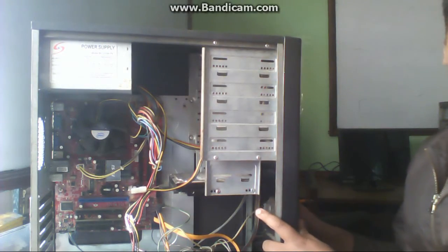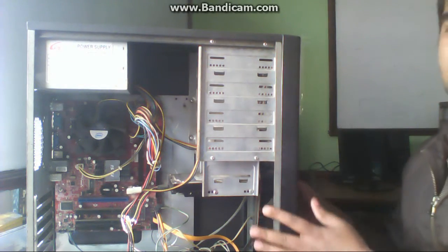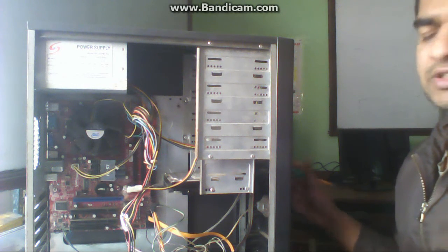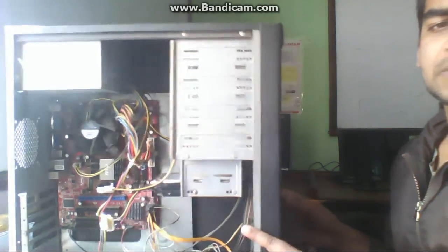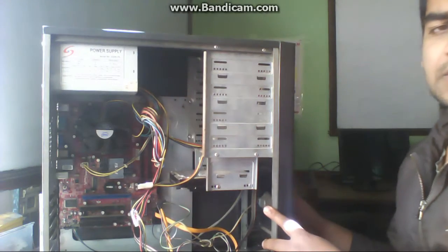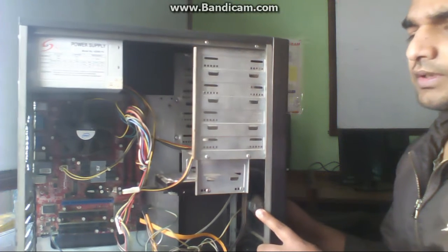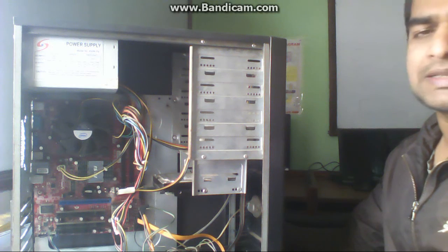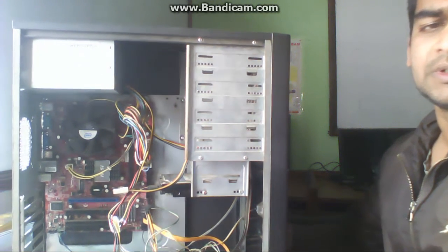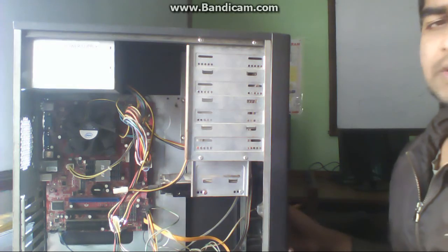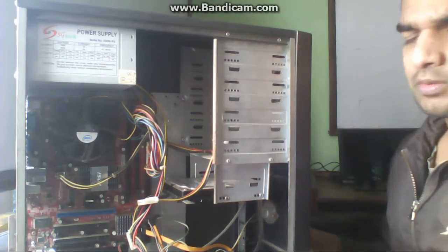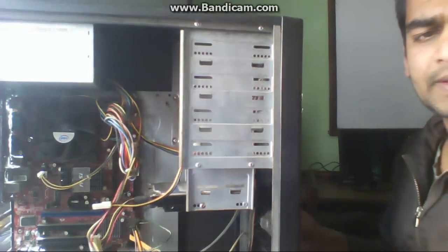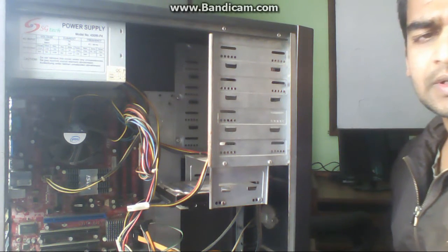This box is also called a tower-type casing because it is placed vertically. In older computers, flat-type casings were used, but this casing is called a tower type. You can also call it an ATX casing — ATX means Advanced Technology Extender. This is the latest type of casing being used in all new computers.